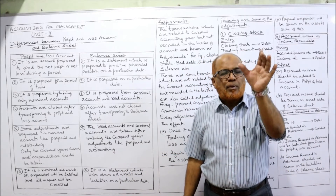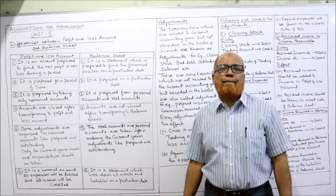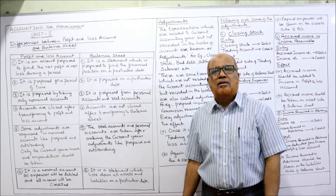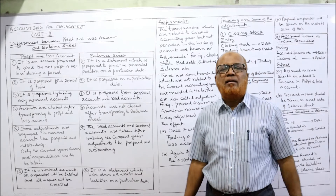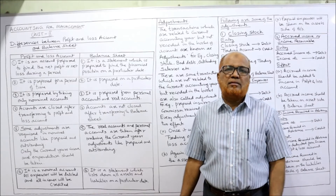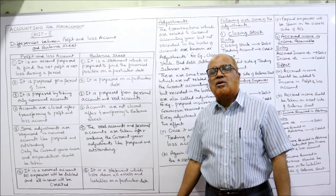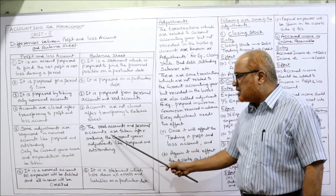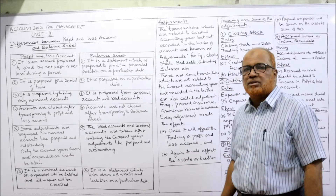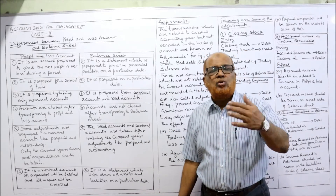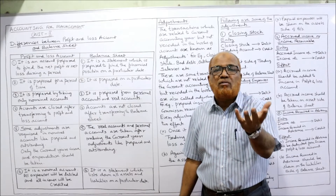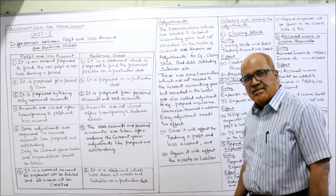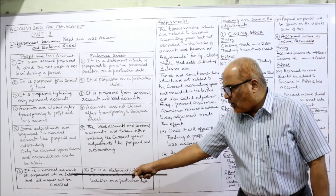Fifth difference — adjustments required. In nominal accounts, adjustments like prepaid and outstanding are required because only the current year's income and expenditure should be taken. We follow the accrual system, so all adjustments for outstanding or prepaid must be made for the profit and loss account. For real and personal accounts, they are taken in the balance sheet only after making current-year adjustments — whatever balance remains after adjustment goes into the balance sheet.